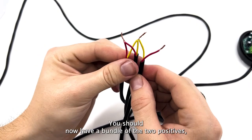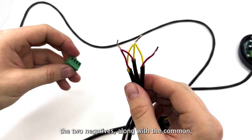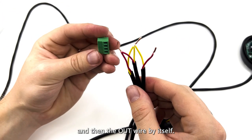You should now have a bundle of the two positives, the two negatives along with the common, and then the OUT wire by itself.